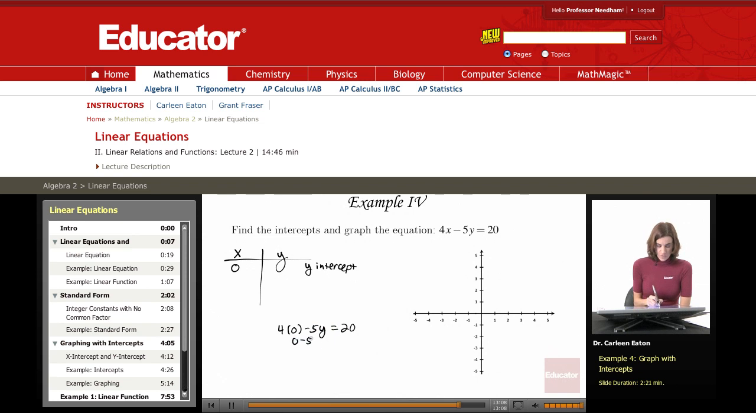This is going to give me 0 minus 5y equals 20 or negative 5y equals 20. Divide both sides by negative 5 to get y equals negative 4.